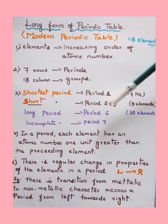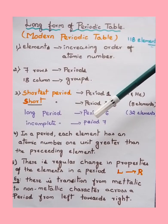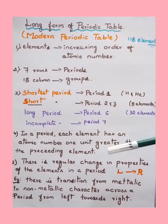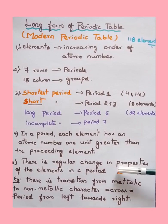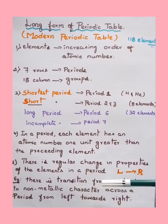Period 6 is the longest period, containing 32 elements, and the seventh period is an incomplete period. In a period, each element has an atomic number one unit greater than the preceding element. As atomic number increases, there are regular changes in properties of elements across a period. For example, there is a transition from metallic to non-metallic character as we move from left to right across a period.